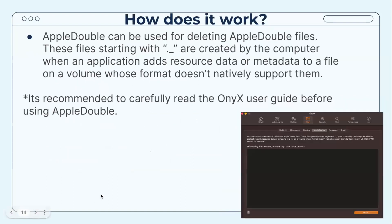AppleDouble files can be deleted using the Folders AppleDouble option. These files start with a period and an underscore, and are created by the computer when an application adds resource data or metadata to a file on a volume whose format doesn't natively support them. If you're going to use this option, it's recommended to carefully read the OnyX user guide beforehand.